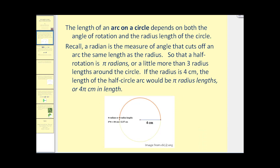The length of an arc of a circle depends on both the angle of rotation and the radius length of the circle. Recall that a radian is the measure of an angle that cuts off an arc length the same length as the radius. So that a half rotation is π radians or a little more than three radius lengths around the circle. If the radius is four centimeters, the length of the half circle arc would be π radius lengths, or 4π centimeters in length.